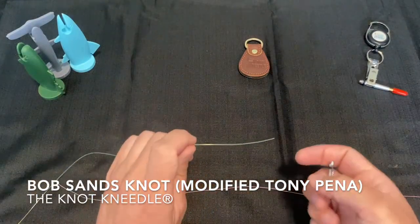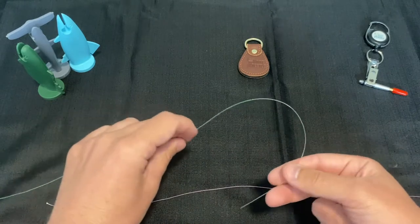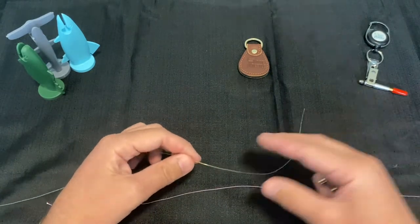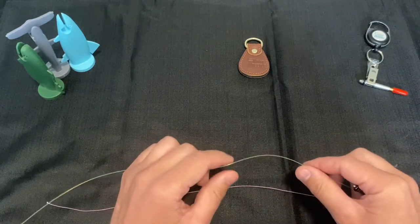Hi, I'm going to show you how to tie the Bob Sands knot using the knot needle. The Bob Sands knot is a modified Tony Peña knot for connecting braid to monofilament or fluorocarbon leaders.